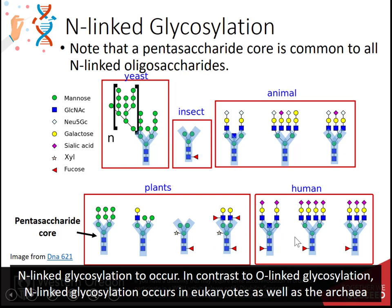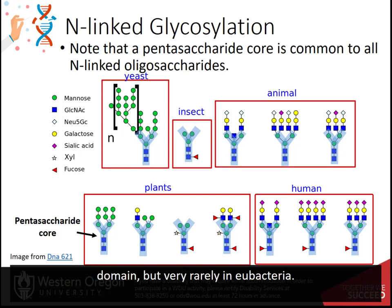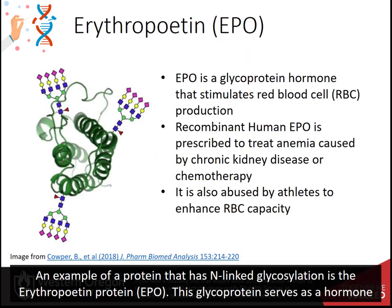In contrast to O-linked glycosylation, N-linked glycosylation occurs in eukaryotes as well as the archaea domain, but very rarely in eubacteria. An example of a protein that has N-linked glycosylation is the erythropoietin protein, EPO.